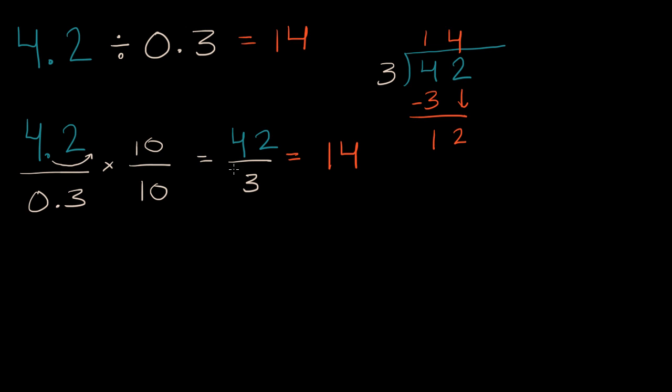And just like we saw in the last example, you could also think of this as 42 tenths divided by 3 tenths, in which case 42 of something divided into groups of 3 of that something, you're going to end up with 14 groups.